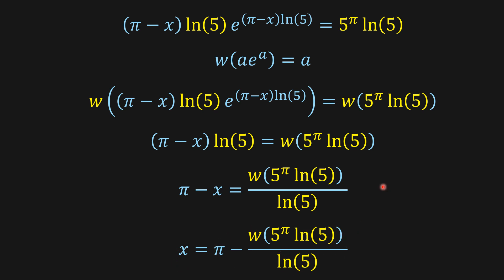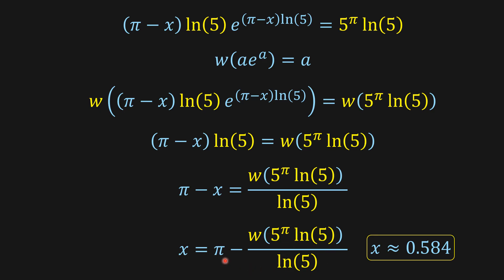If we want some approximation, we can have this: x is equal to 0.584. In order to find this expression, you have to plug this expression into Wolfram Alpha. You're going to get some number, then divide that number by ln of 5, and then subtract from pi this number, and you're going to get this result. Let me know in the comments what you think about this solution. Don't forget to subscribe. Thank you very much. See you next video. Bye-bye.